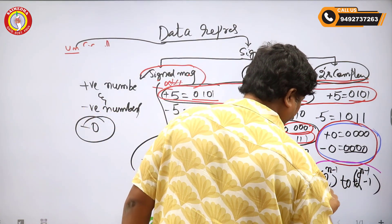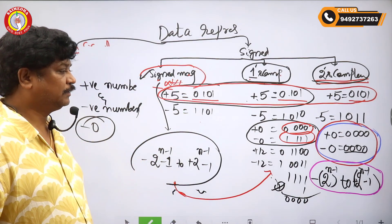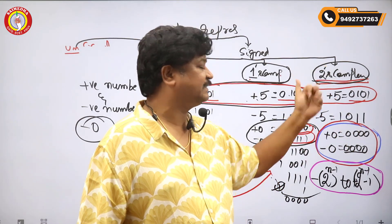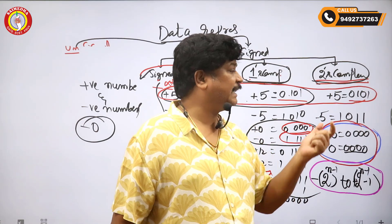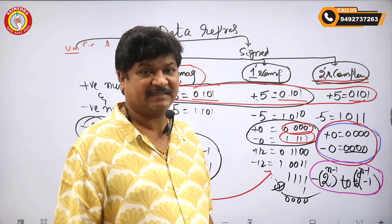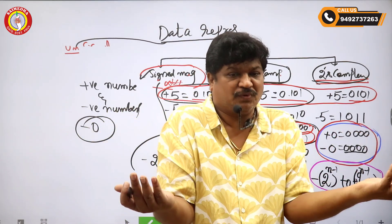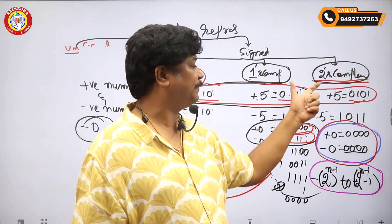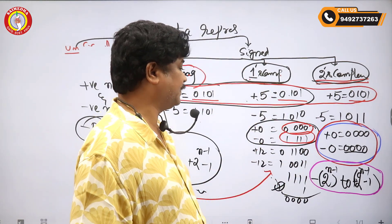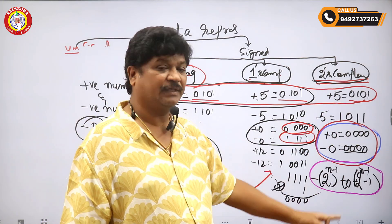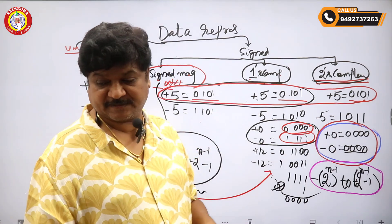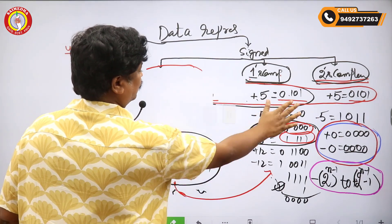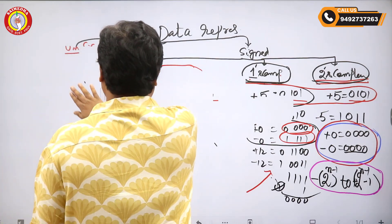The most popular data representation in computer systems is two's complement data representation. The reason: there is no negative zero, only positive zero exists, and both positive and negative numbers are possible. That is why two's complement is one of the most popular data representations among all.